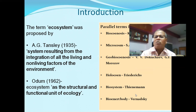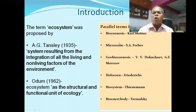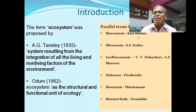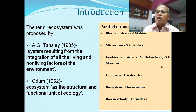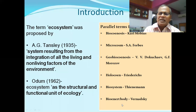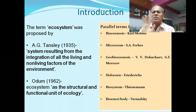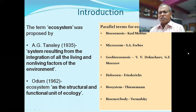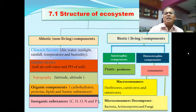There are parallel terms for ecosystem: Biocoenosis (Carl Mobius), Microcosm (Forbes), and Geobiocoenosis (Dacucho and Morozov). These are all parallel terms used to describe what is now well known as the structural and functional unit of ecology — the ecosystem.